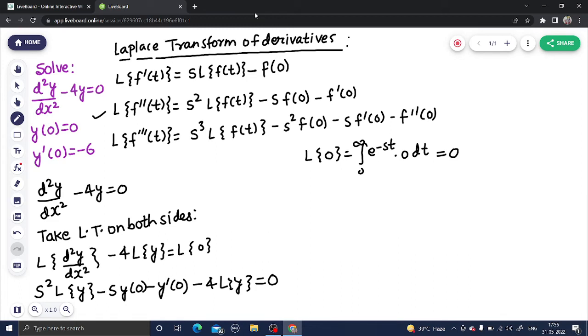Now carefully look at this. y(0) is given to be 0, so this term vanishes. This is minus 6, so minus minus gives plus 6. We are assuming Laplace of y to be equal to y bar. This is s² - 4 times Laplace of y equals -6.